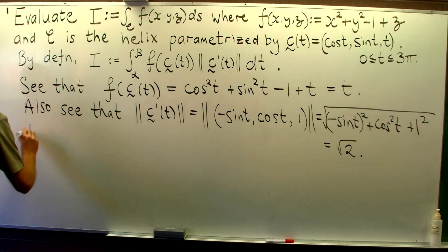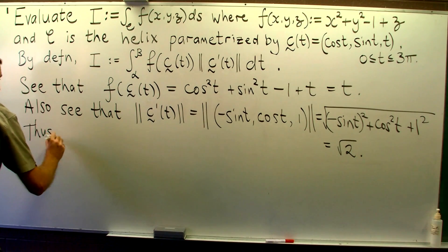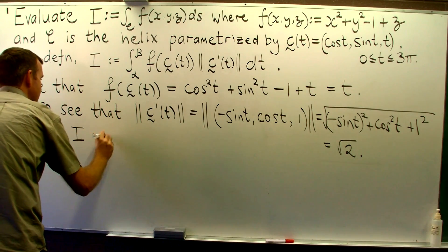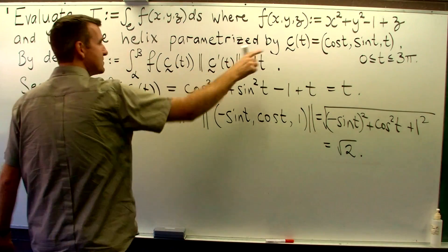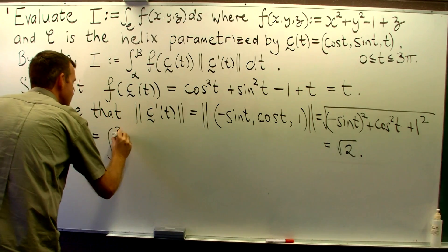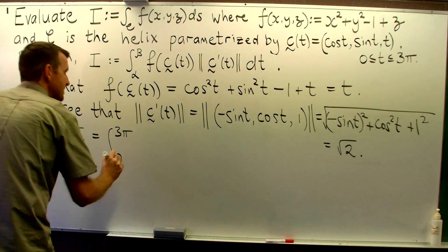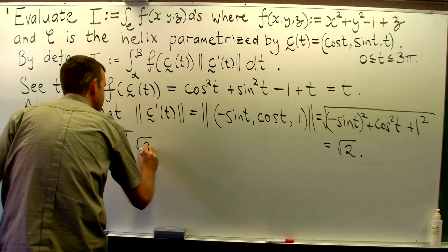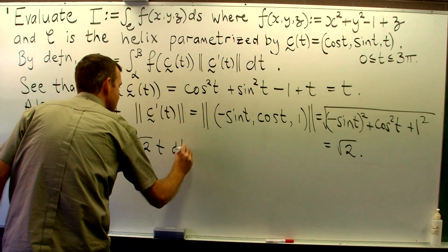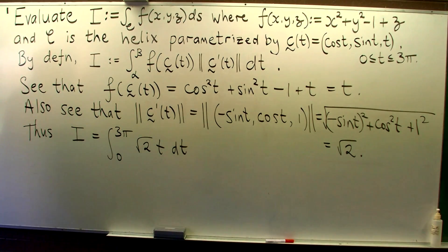So putting our two parts together, our beta is 3 pi, our alpha is 0, we obtain the following very simple integral.